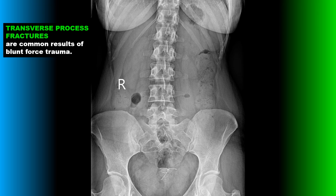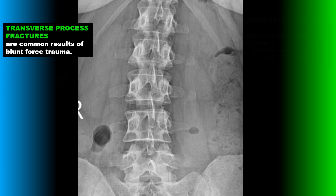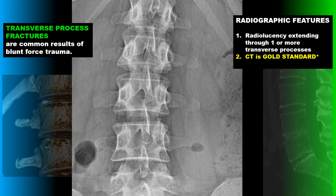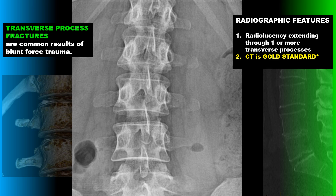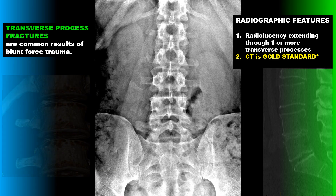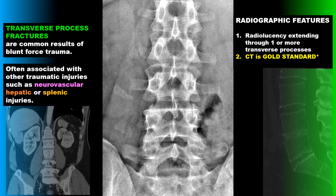Another common fracture of the spine is transverse process fractures, usually a result of blunt force trauma. Radiographically we're looking for radiolucency extending through one or more of the transverse processes, which can be very challenging to see. CT is the gold standard for finding a transverse process fracture. These are often associated with other traumatic injuries such as neurovascular, hepatic, or splenic injuries.